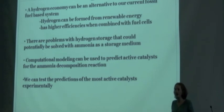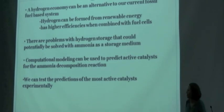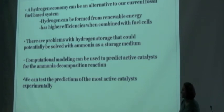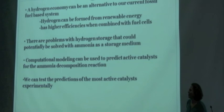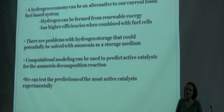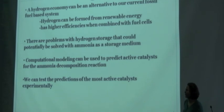We talked about how ammonia can possibly solve the storage problem by being stored as a liquid in the vehicle and then decomposing to create the hydrogen to run the fuel cell. We also talked about how computational modeling can be used to predict active catalysts for the decomposition reaction — and this is not unique to ammonia decomposition. Computational methods can be used to predict active catalysts for any reaction, and this is a relatively new method within chemical engineering and science.